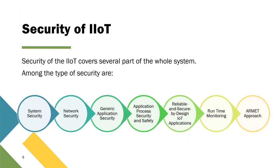Since IoT is a very complex system, security will cover several parts of the whole system. Some parts may use a certain type of security while others use different types. The types we'll look at today include: system security, network security, general application security, application process security and safety, reliable and secure design IoT application, runtime monitoring, and the ARMAD approach. Of course, there are many more IoT security types, but these are some basics we need to look into.